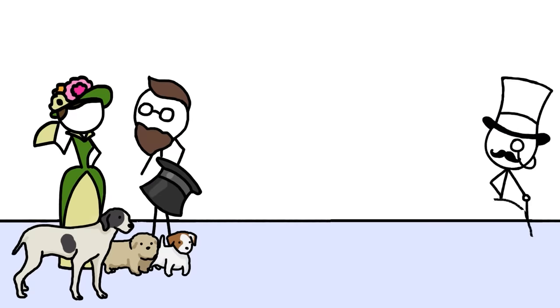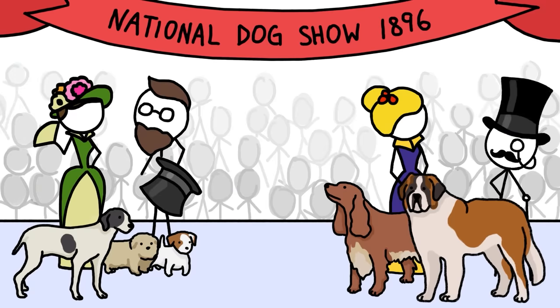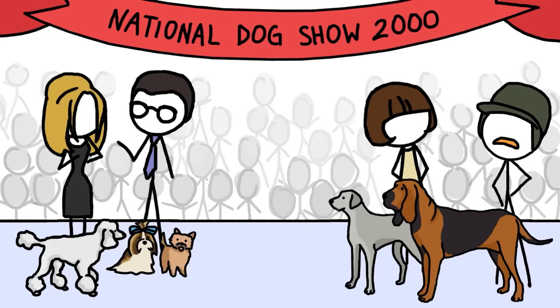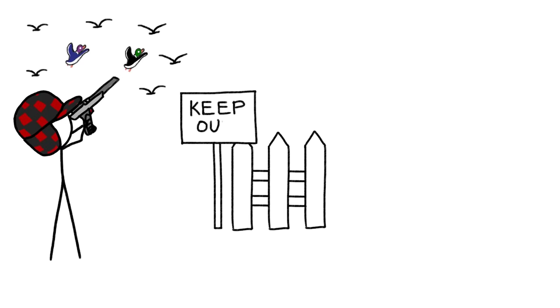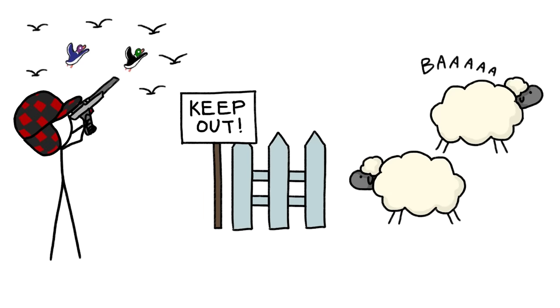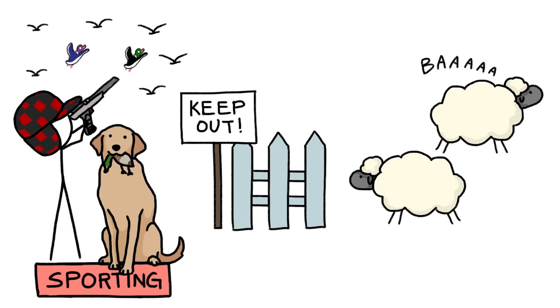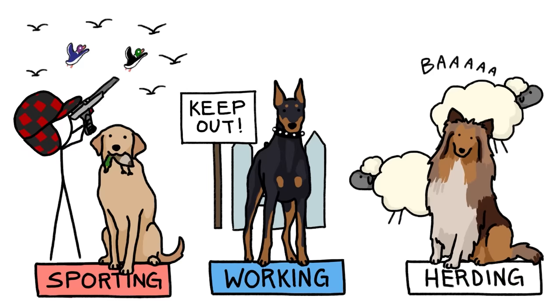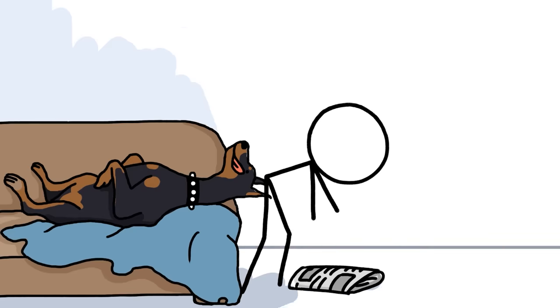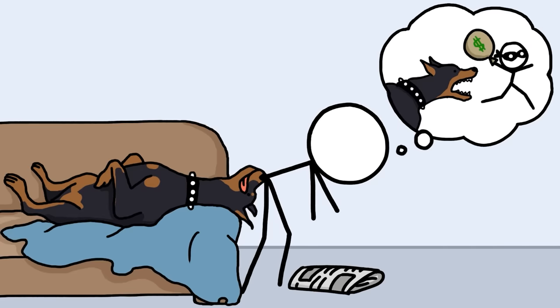Ever since rich British folks invented dog shows as a spectator sport in the late 1800s, people have been parading pooches around with the goal of taking the top spot in their dogs' so-called breed group. These breed groups are based on the historical jobs dogs were bred to do, with game retrievers like Labs and Spaniels in the sporting group, guard dogs like Dobermans and Mastiffs in the working group, and herding dogs like Collies and Sheepdogs in the herding group. And although most dogs today are just butt-sniffing layabouts,